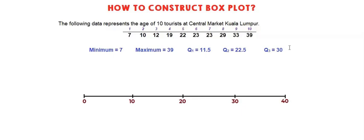Now look at how to draw the box. You draw a vertical line for Q1, Q2, and Q3.